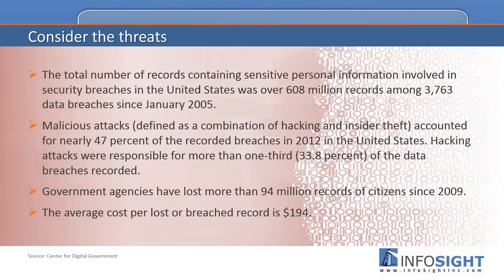Another thing to consider: the total number of records containing sensitive personal information involved in security breaches was over 608 million records since January of 2005. Malicious attacks accounted for nearly 47% of the records breached in 2012 in the United States — meaning it's actually the hacking industry out there trying to gain access to your confidential information. Government agencies have lost more than 94 million records of citizens' information since 2009, and the average cost for a lost or breached record is roughly $194.